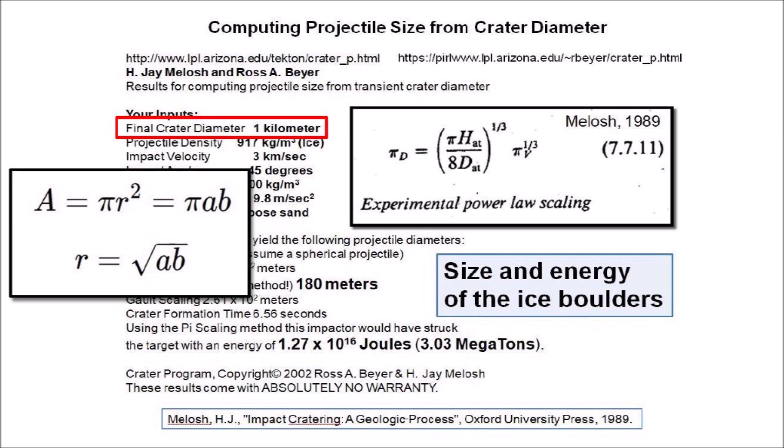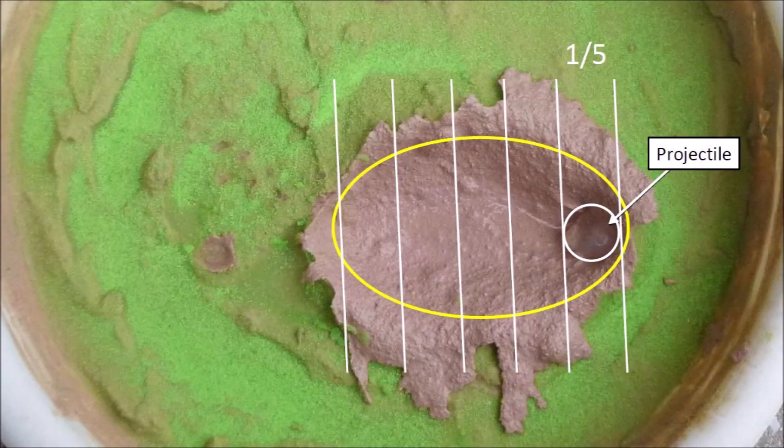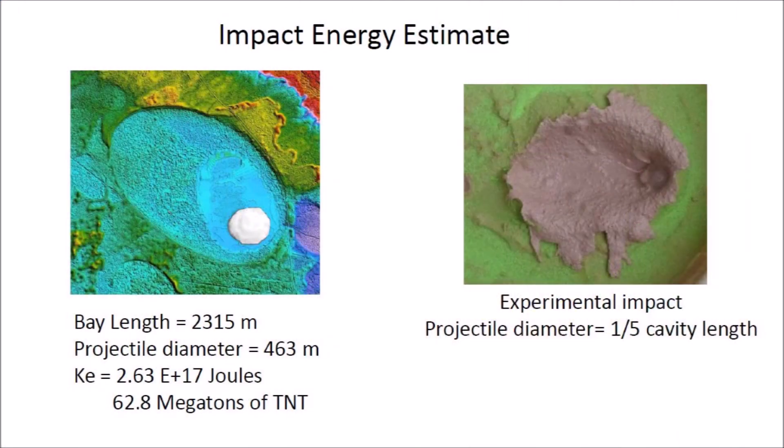The calculator by Melosh and Bayer assumes that the crater is circular. In order to use it for Carolina Bays, it is necessary to map the area of an ellipse to the area of a circle to obtain the crater diameter for use in the calculator. The projectile sizes produced by the calculator are approximately one-fifth of the major axis of an elliptical basin. This coincides with the experimental model. In general, we can estimate that the ice projectiles that made the Carolina Bays had diameters of one-fifth of the bay lengths. Using projectile diameters that are one-fifth of the major axis of the Carolina Bay produces results that are in the same range as the impact calculator.